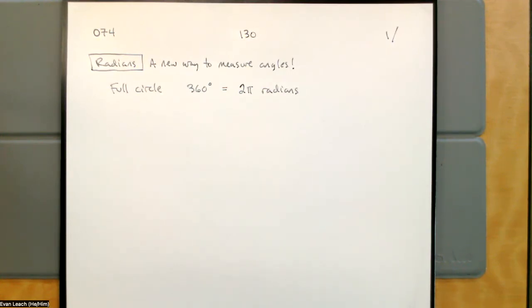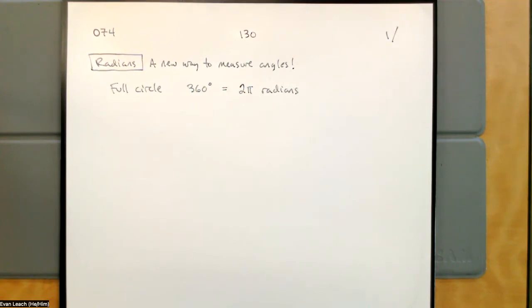But this is what we do. Another common way to break this down is to say that 180 degrees is pi radians.